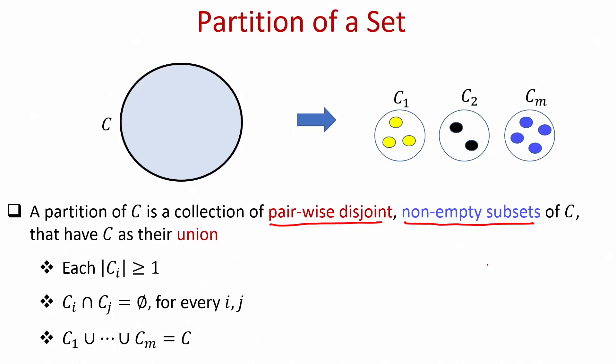One trivial partition of the set C is the set C itself. I can imagine that C is partitioned into just one subset, namely the entire set C. Or I can decide to partition C into exactly two halves, or into three sets of equal sizes, and so on. So there might be various ways of partitioning a set — there is not a unique way of partitioning a set. How many ways you can partition a set is a very interesting question we will come back to later.